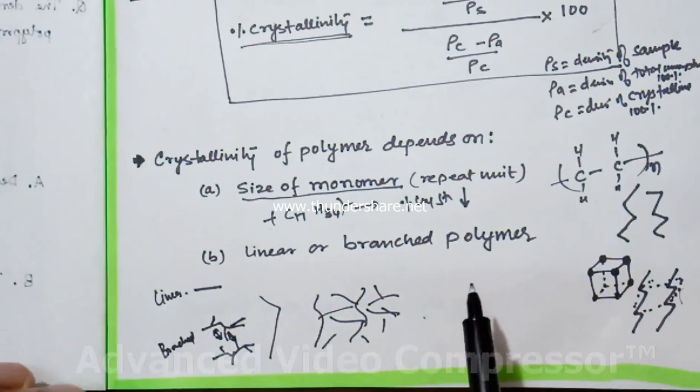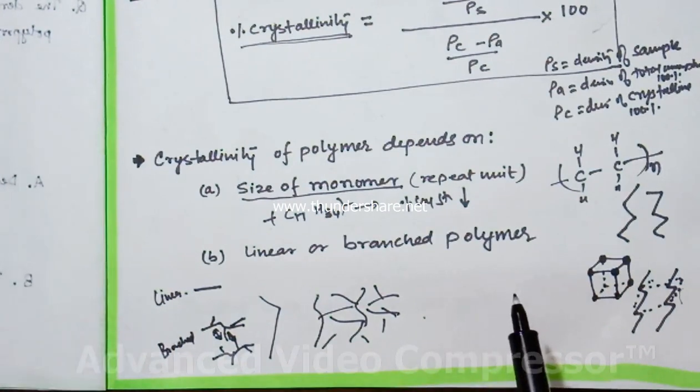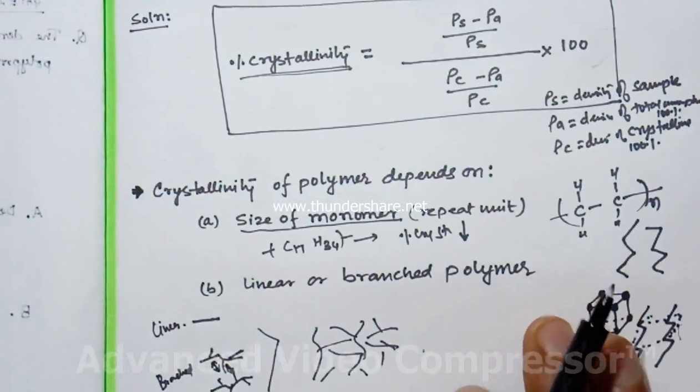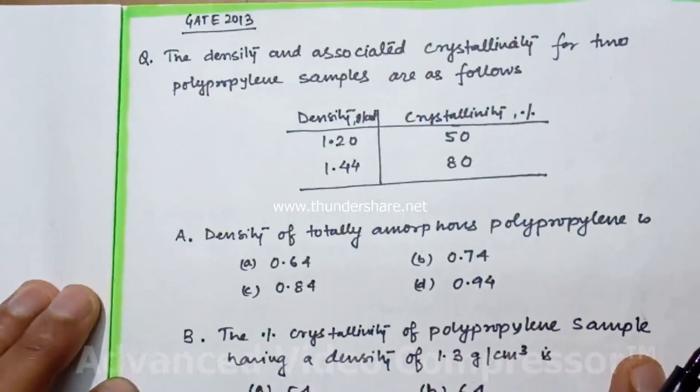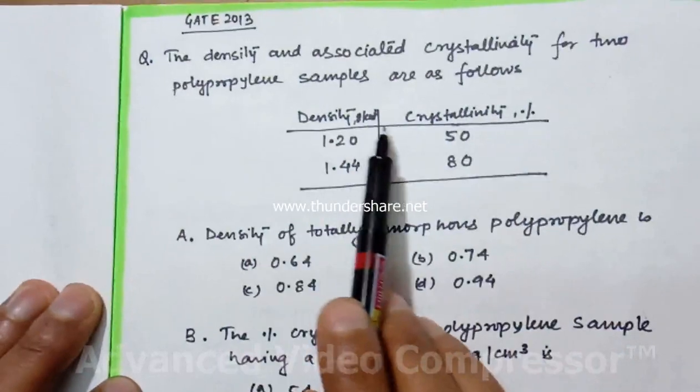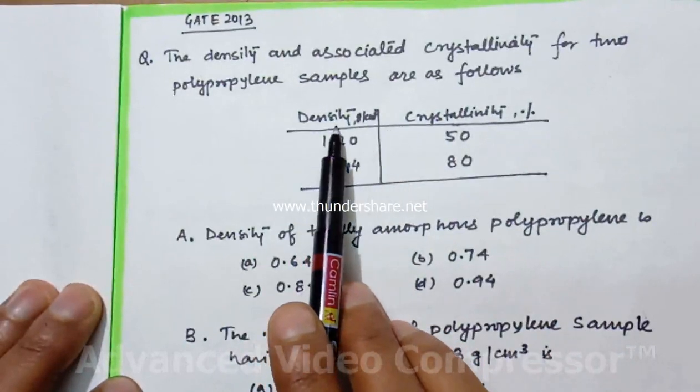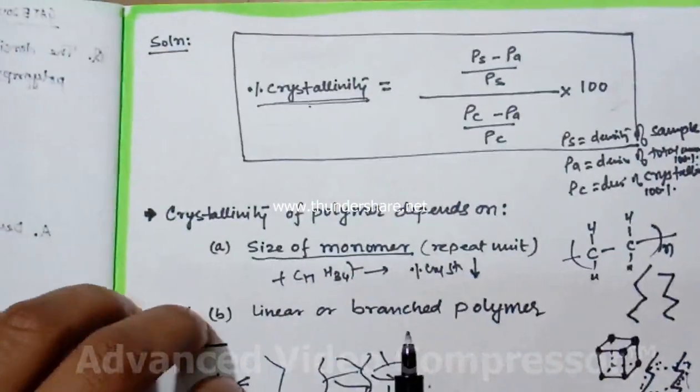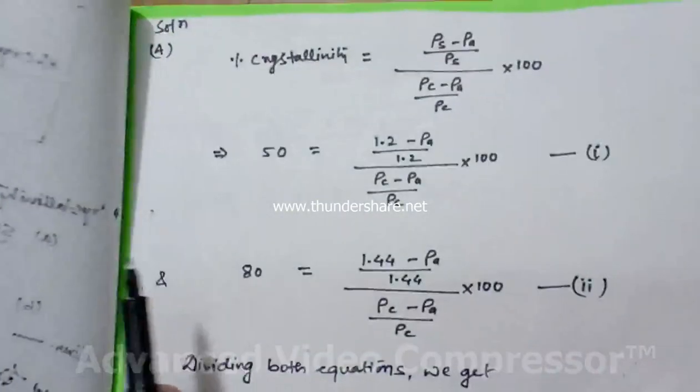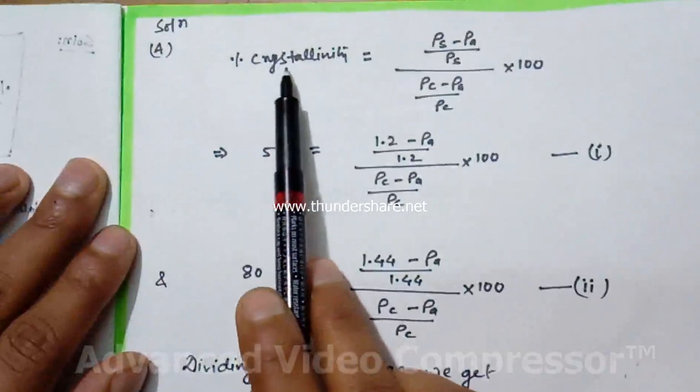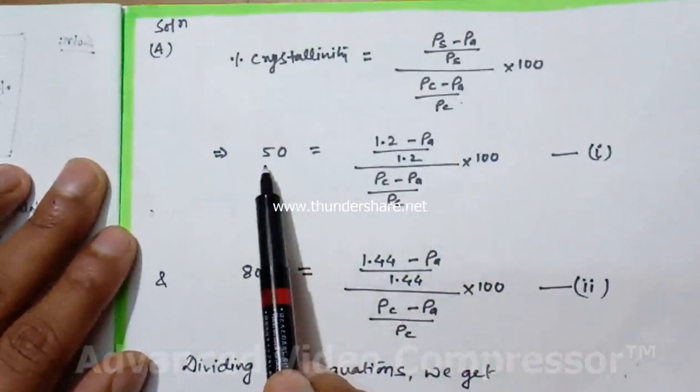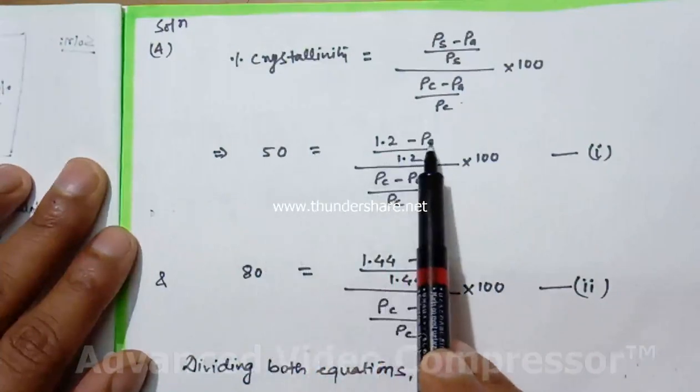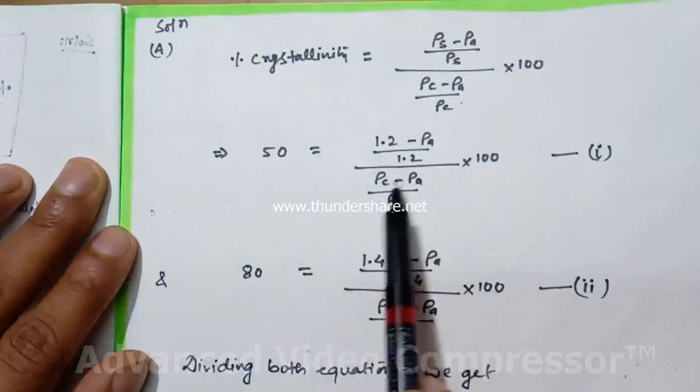Now we will solve the question. We are given density and crystallinity, so we will use the formula. Percentage crystallinity equals this. First case: 50 equals 1.2 minus rho A divided by 1.2, all divided by rho C minus rho A by rho C times 100.